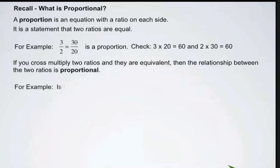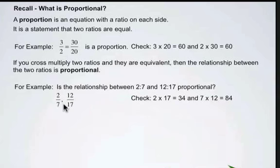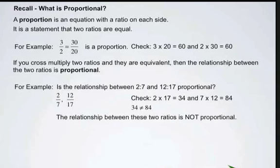Let's try it with this example. Is there a proportional relationship between 2 to 7 and 12 to 17? If we take a look at those two ratios, 2 to 7 and 12 to 17 in fraction format, and we cross-multiply 2 times 17 is 34, 7 times 12 is 84. So since 34 is not equal to 84, the relationship between these two ratios is not proportional.